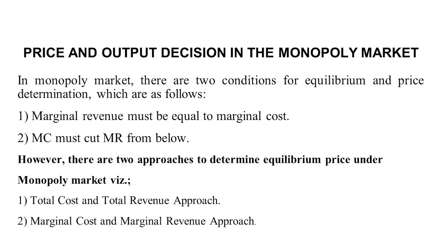I hope that monopoly is now clear to you. Now let's start with the topic of price and output decision in the monopoly market. In a monopoly market, there are two conditions for equilibrium and price determination. The first condition is that marginal revenue must be equal to marginal cost. The second condition is that the marginal cost curve must cut the MR curve from below. There are two approaches to determine equilibrium price: the first is the total cost and total revenue approach, and the second is the marginal cost and marginal revenue approach.